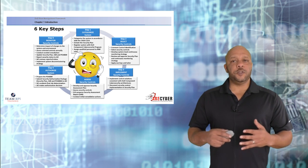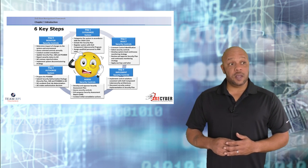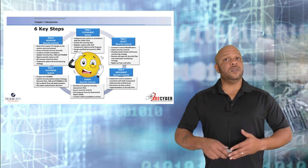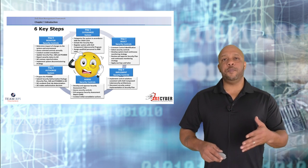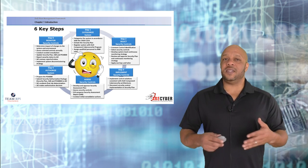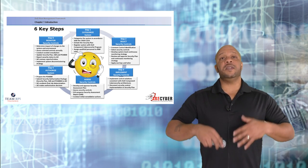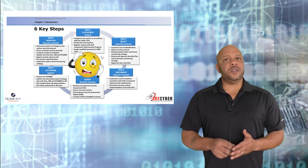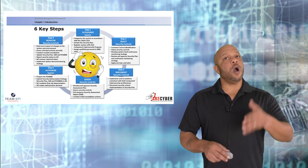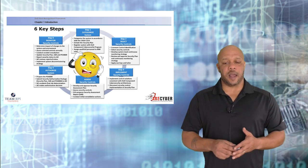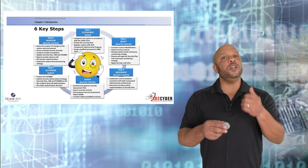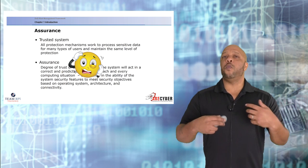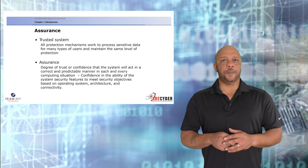The risk management framework is composed of six core steps: Categorize, Select, Implement, Assess, Authorize, and Monitor. Throughout this series, we're going to walk one by one through each of the steps, ensuring that you have a full understanding of what's required in each.